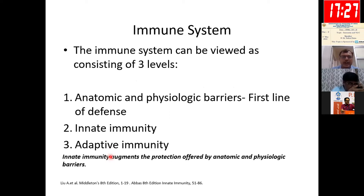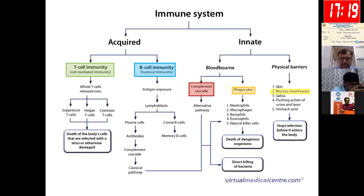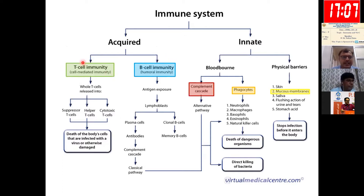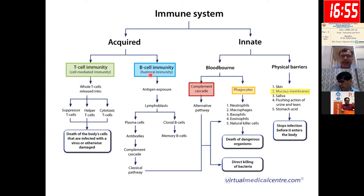The immune system can be viewed as consisting of three levels. Anatomical and physiological barriers are the first line of defense; innate immunity and adaptive immunity remain the second line of defense. Acquired immunity comprises T cells and B cells. Innate immunity includes physical barriers and phagocytes. The complement system is included in both: the classical pathway is part of acquired immunity, whereas the alternate pathway is part of innate immunity.